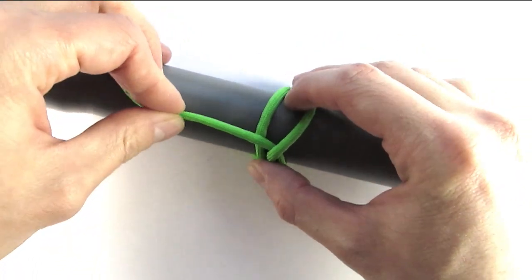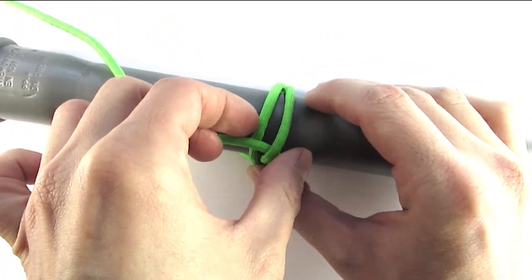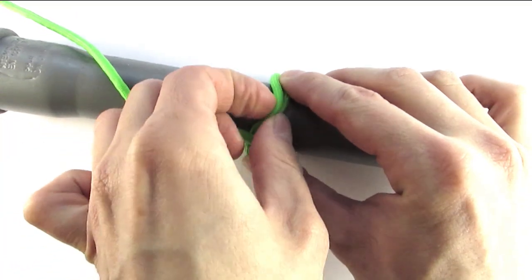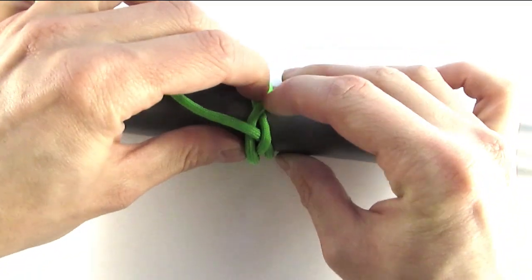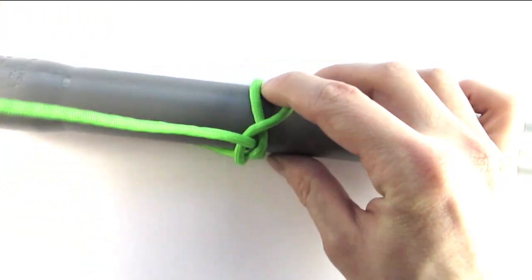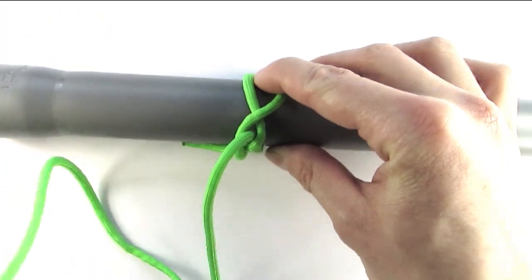To continue, we're going to take our left top cord and place it over the right one like this. Then take our working end and go under, over to the right side.